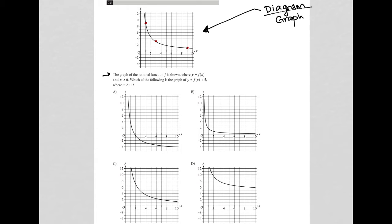So the question says the graph of the rational function f is shown where y equals f of x and x is greater than or equal to 0. Yep, x is positive. Which of the following is the graph of y equals f of x plus 5?